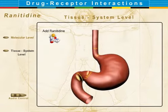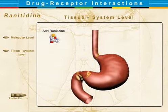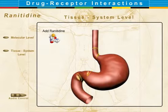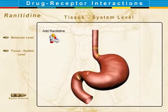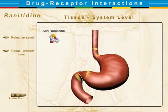Here we see pain originating from the duodenal end of the stomach, as well as the upper esophageal end — GERD. This pain of acid secretion is resolved by using ranitidine.